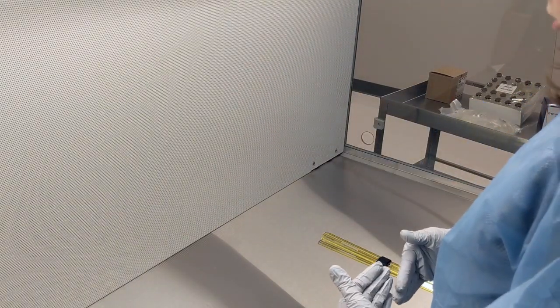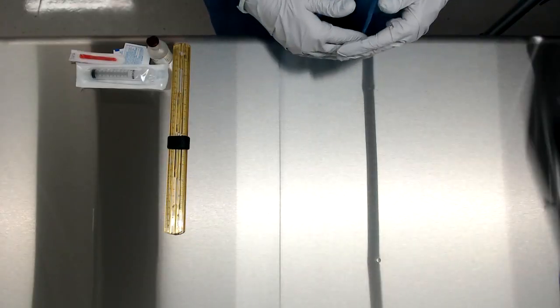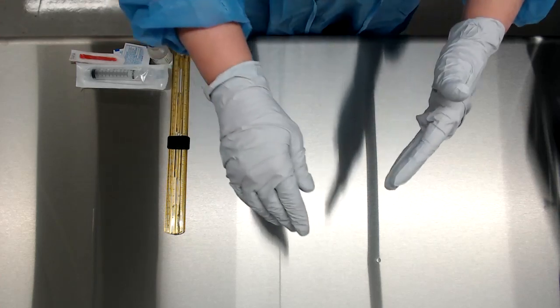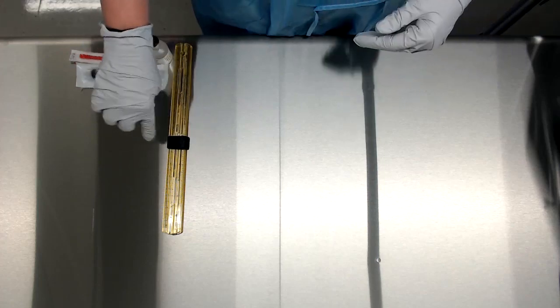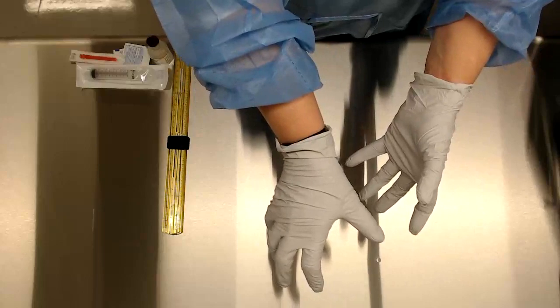As you get closer to the edge of the hood, turbulence exists. So we don't want to work at the edge near where you stand. We always want to work six inches in. Today I have a ruler here to show you. This little black mark is where you want to work beyond, so that you're in the sterile field.